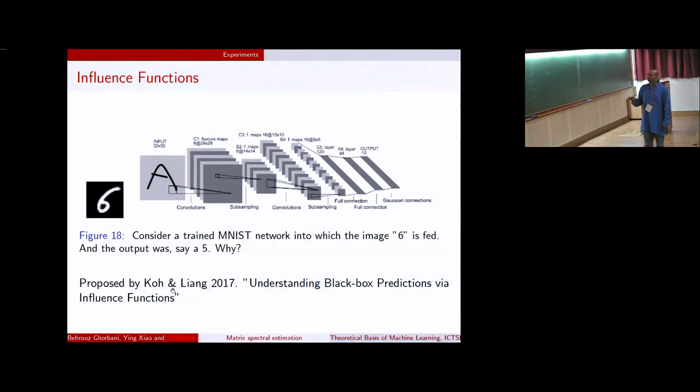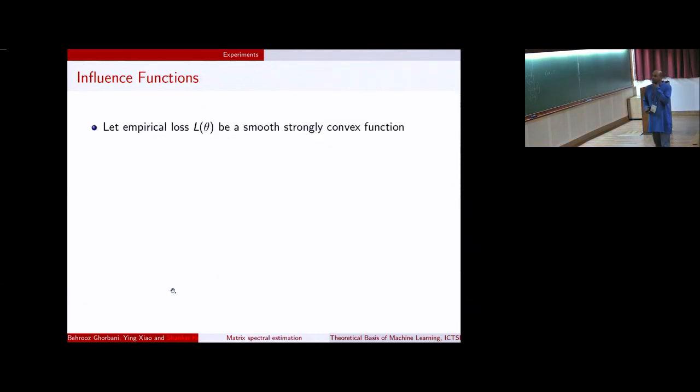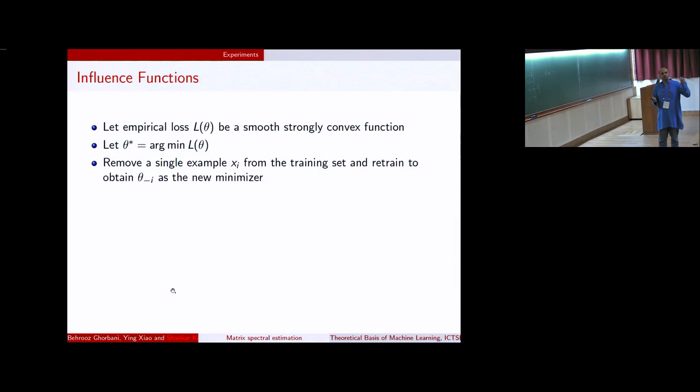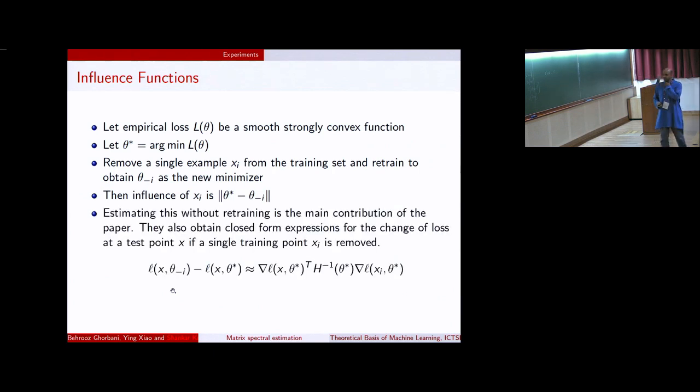Think of this as a convolutional network. You feed an MNIST digit six, and the classifier says it's five. Now you want to know why. So they analyze this for smooth, strongly convex functions, and they say that suppose you train this model to a local optimizer, like theta star. Now you remove a single example xi from your training set, and retrain the whole thing, and let theta minus i be the new minimizer. The influence of xi is how much the parameters moved. If it moved a lot, then this is very useful. Otherwise, it's not.